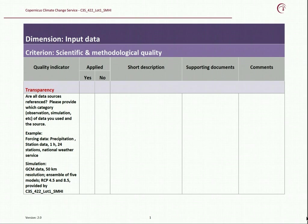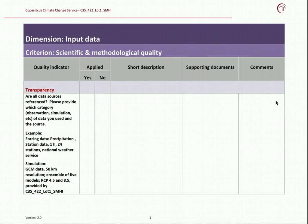Moving on to the next column, 'Applied — yes or no': it means have you applied this quality indicator, transparency, in your showcase? If yes, then you check here 'yes,' and in the next column 'short description,' please provide a short description of how you have treated the quality indicator transparency in your showcase. Then in the next column 'supporting documents,' please provide any kind of documents, links, papers, or reports that help and support your performance.